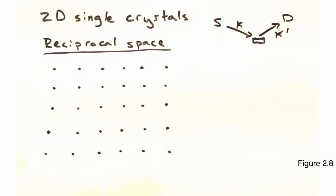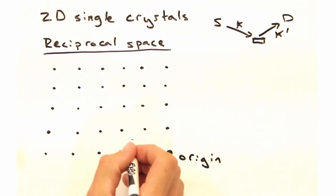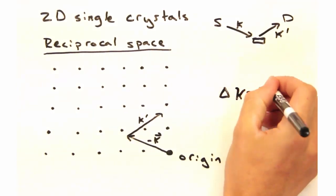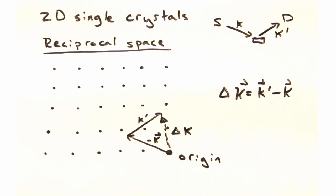The tail of our minus k vector sits at the origin. Then if we draw k prime out like so, delta k would just be this line here.